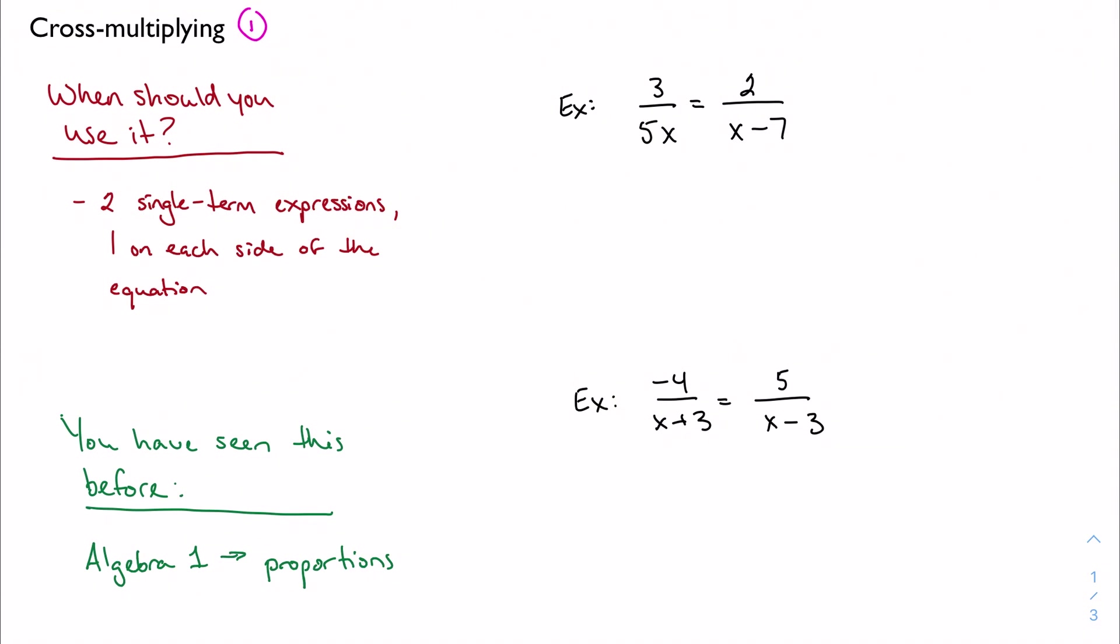Right, so I'm going to cross-multiply. So I would have 3 times x minus 7 equals 2 times 5x. In my first example, I would distribute, and I would solve. So x equals negative 3.